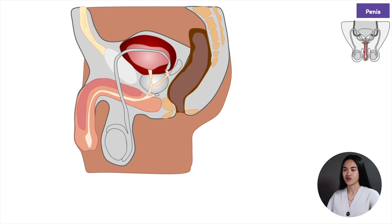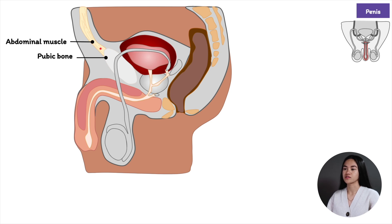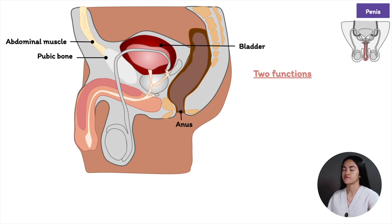Before we talk about the structure, let's label the other parts first. This right here is the pubic bone, this is the abdominal muscle, then the bladder and anus. Now the penis has two main functions. Number one, sexual intercourse — so when the individual is aroused, erection occurs.